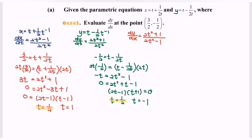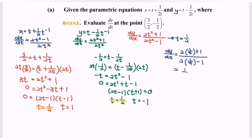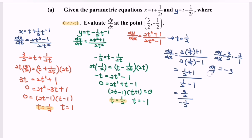Now substitute t equals 1 over 2 into dy/dx. dy/dx equals 2 times (1 over 4) plus 1, over 2 times (1 over 4) minus 1, which simplifies to 1 over 2 plus 1 over 1 over 2 minus 1, giving 3 over 2 over negative 1 over 2. Therefore dy/dx equals 3 over 2 multiplied by negative 2, which equals negative 3. This is the first derivative at the point (3 over 2, negative 1 over 2).